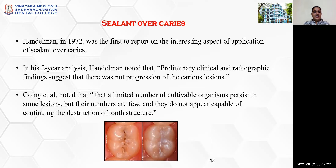Sealant over caries: Handelman in 1972 was the first to report on application of sealant over caries. In his two-year analysis, preliminary clinical and radiographic findings suggested there was no progression of the caries lesions. Goen et al. noted that a limited number of cultivatable organisms persist in some lesions but their numbers are very few and they do not appear capable of continuing destruction of the tooth structure.